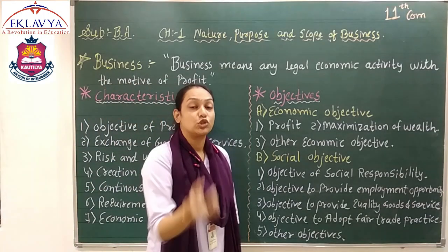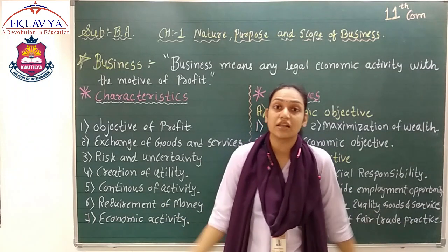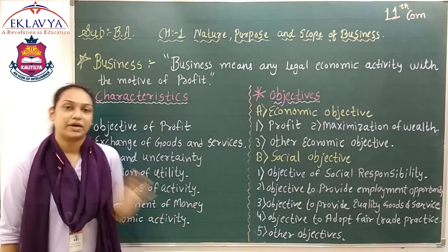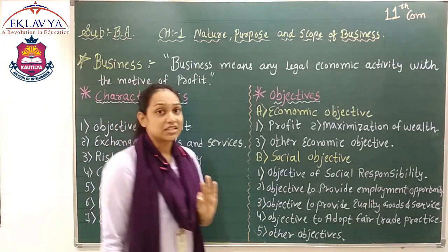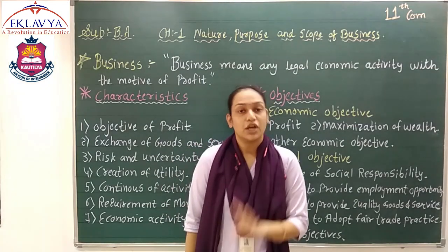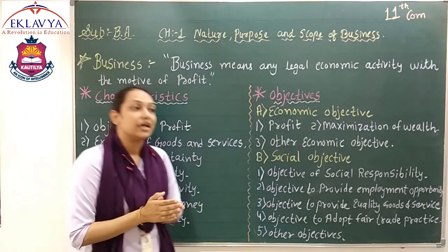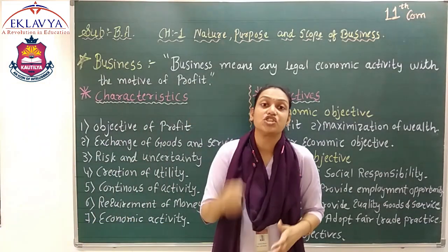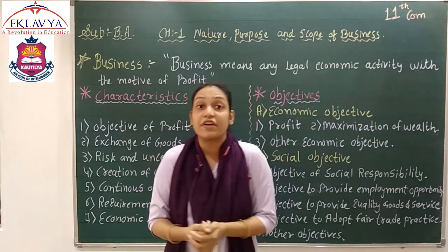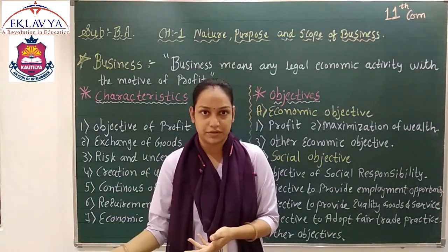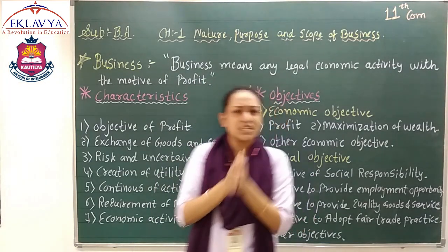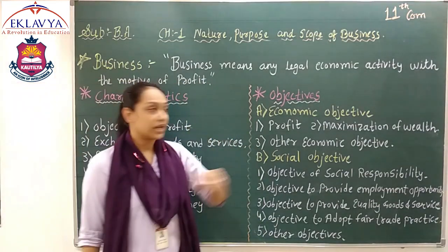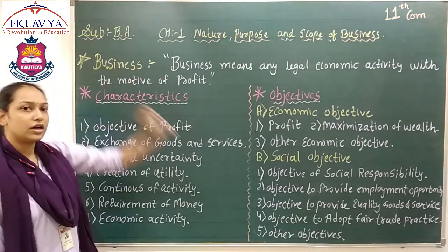Now, when we do business, why do we do it? What do we want to achieve? The first reason is clear: we want to earn profit, to get money. But alongside profit, we also have many different objectives in business that we need to achieve. For example, today we have one factory, but tomorrow we also want to open a second factory. So business has certain objectives that we need to fulfill. Those objectives are our next topic: the objectives of the business — first is the economic objective and second is the social objective.